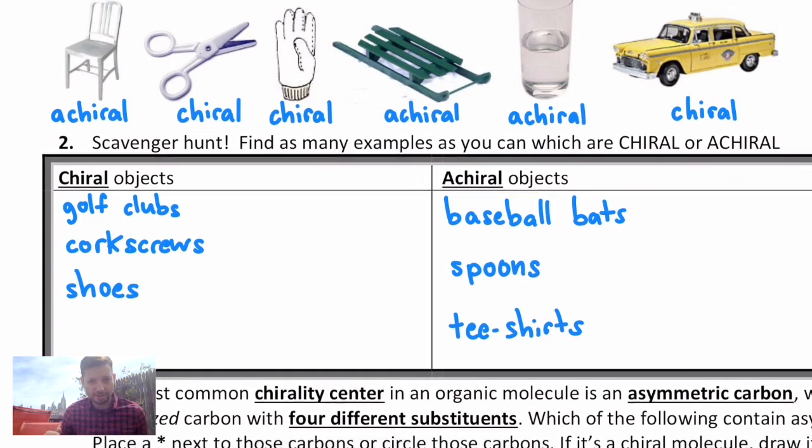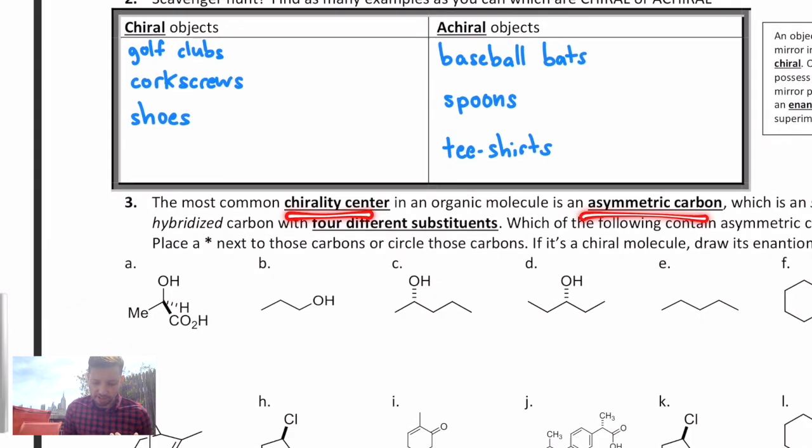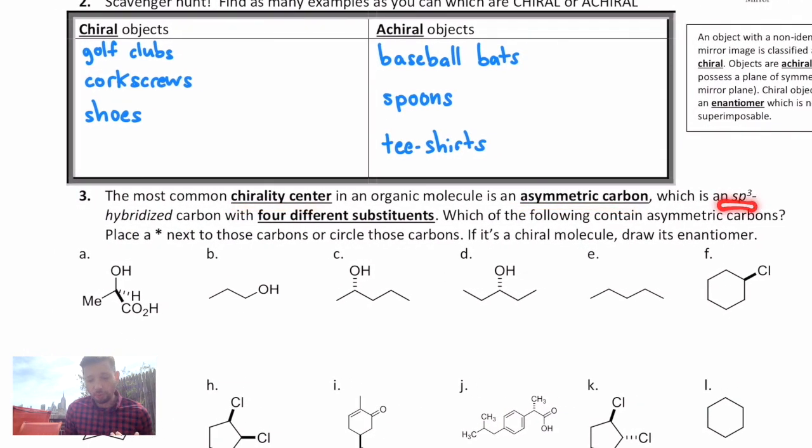So what does this have to do with molecules? Let's look at the chirality in a molecule. Well, the most common chirality center that we're going to see is what's called an asymmetric carbon. That exists when you have an sp3 hybridized carbon with four different atoms or groups of atoms, let's say substituents, attached to that carbon.